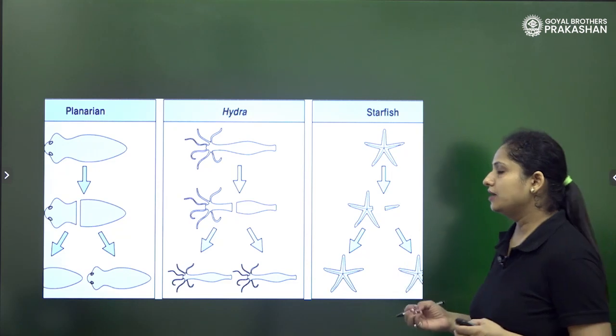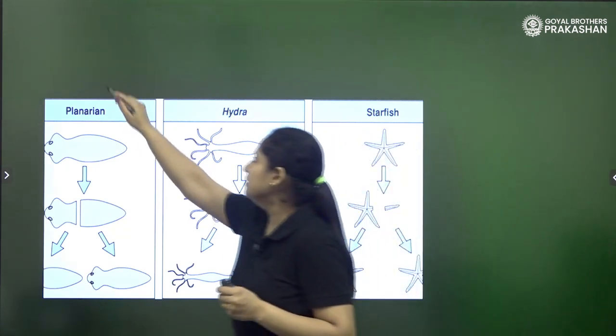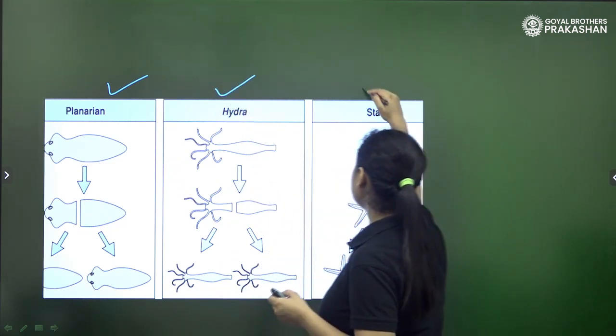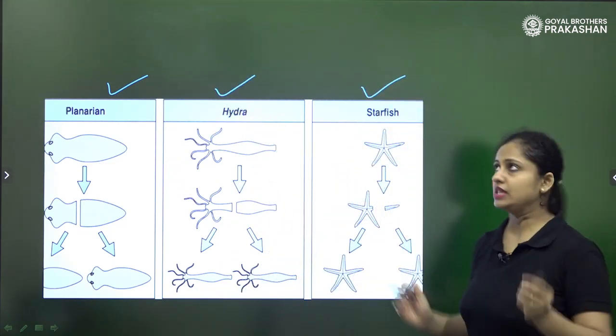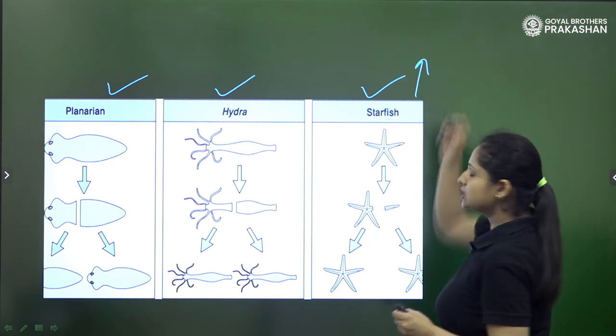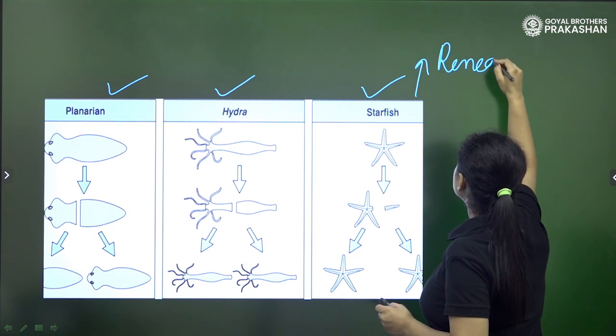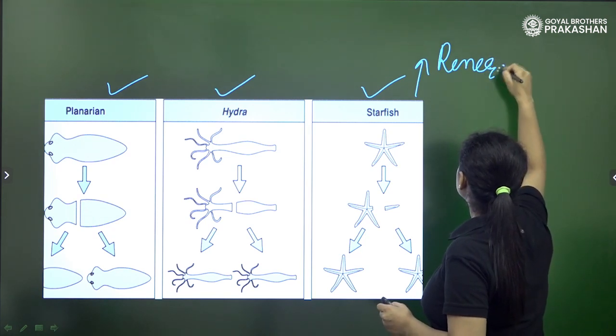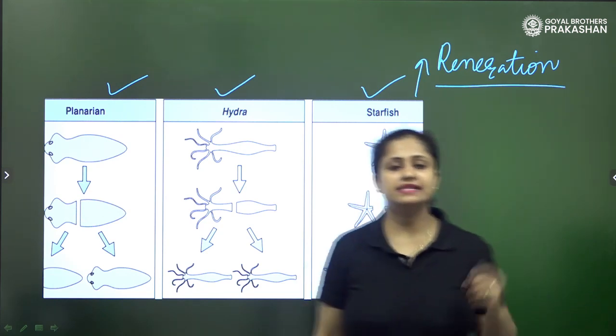So this is how the process of regeneration is carried out in planaria, hydra, and starfish. In three of them there is the mode of asexual reproduction that is regeneration.